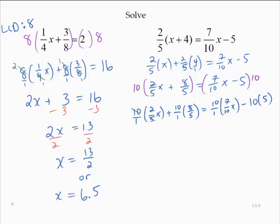Reducing appropriately, this 10 and 5 yields a 2 and a 1. This 10 and 5 yields a 2 and a 1. Simplifying, 4x plus 16 is equal to 7x minus 50.